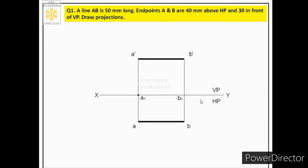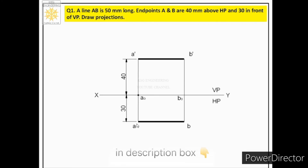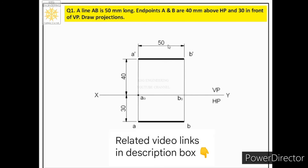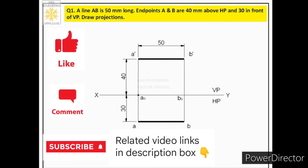We have drawn the front view and top view for Case 1. Next, we place dimensions: 40 mm and 30 mm following the rules of chain dimensioning, maintaining a 10 mm gap and a 1 mm gap as required. We also show the true length of 50 mm, placed on the front view. This completes Case 1 of projections of lines.